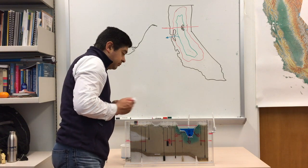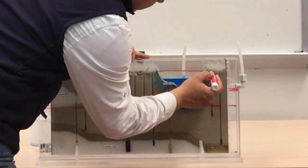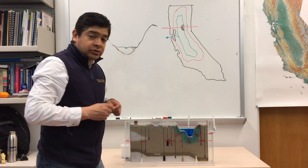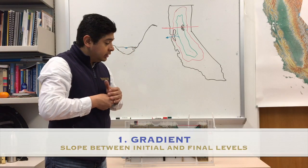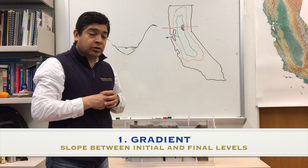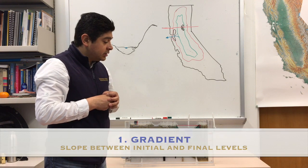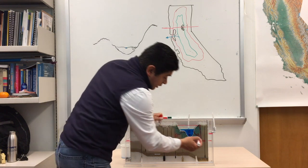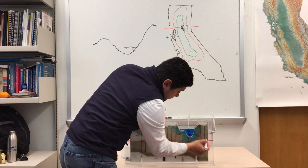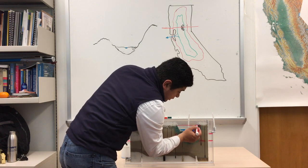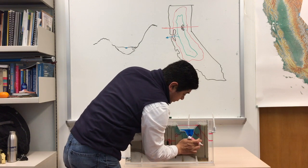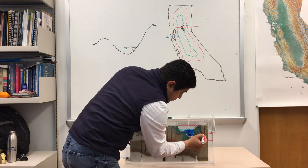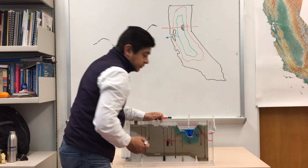There is something that is called a gradient. A gradient is the slope of the water, the difference and the slope that the water has at that initial point. In this case, initially, the water table was here and here. So the slope between these two points is this one.